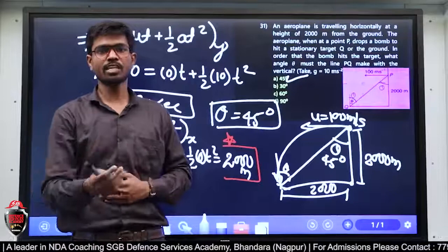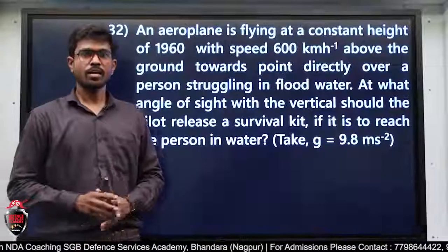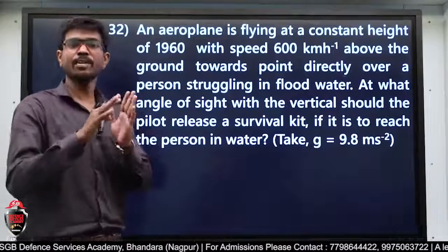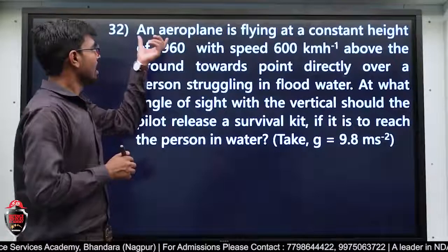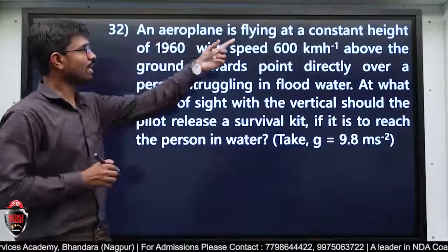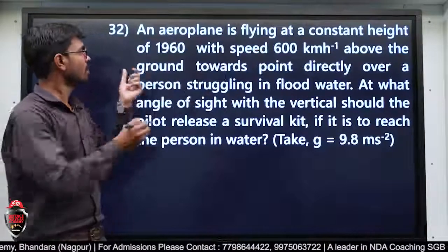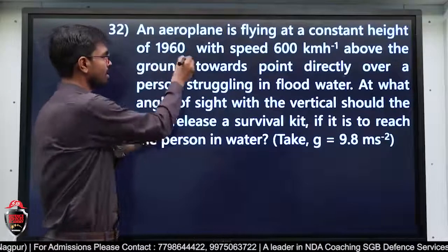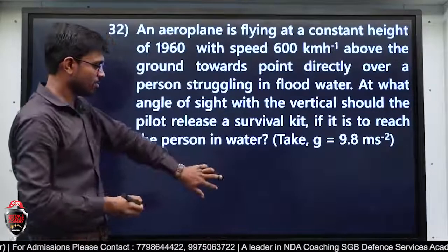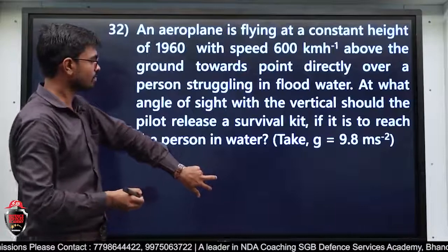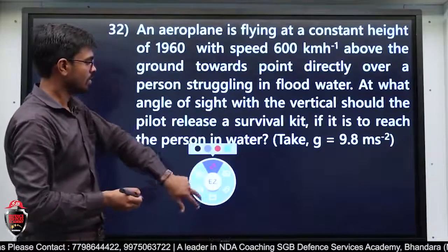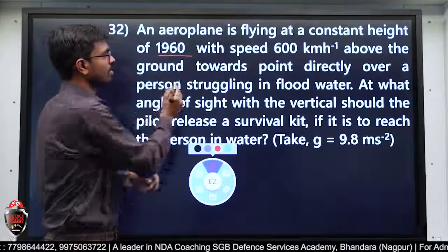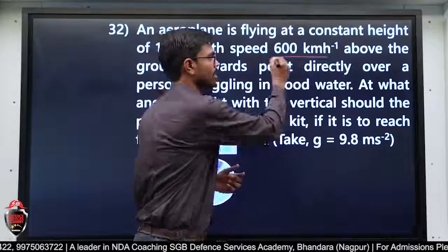अभी अगले question की तरफ जाते हैं। बच्चों अगला problem देखते हैं — यह problem similar है previous problem जैसा। An aeroplane is flying at a constant height of 1960 meter with a speed of 600 km per hour above the ground।